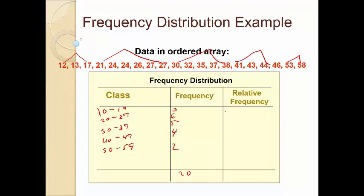The relative frequencies are: 3 divided by 20 is 0.15; 6 divided by 20 is 0.30; 5 divided by 20 is 0.25; 4 divided by 20 is 0.20; and 2 divided by 20 is 0.10. When you sum these relative frequencies, they sum to 1, which is what we want.